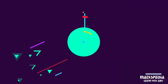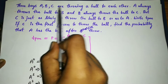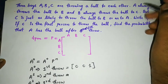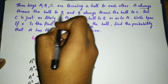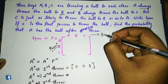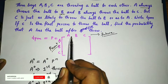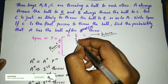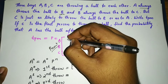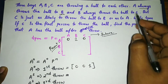The question involves three boys A, B, and C throwing a ball to each other. A always throws the ball to B. So in the present state, A throwing to B means the probability is 1. A never throws to himself, so that is zero, and A never throws to C, so that is also zero.